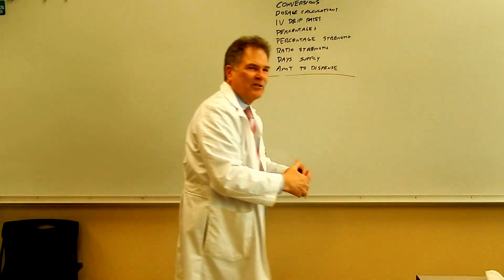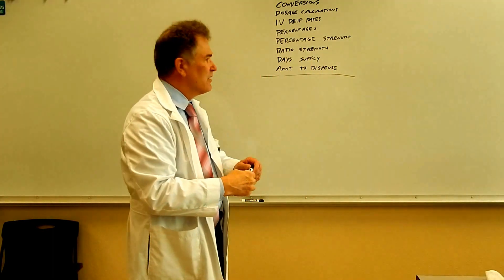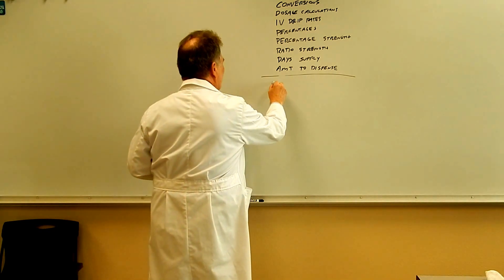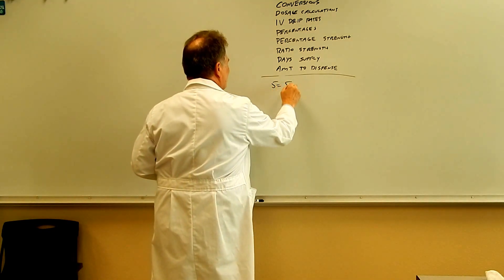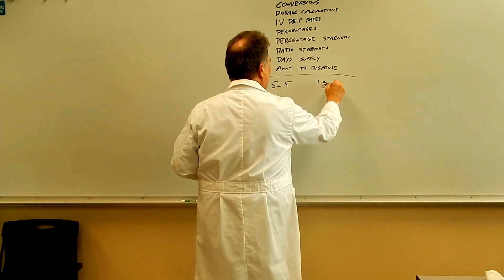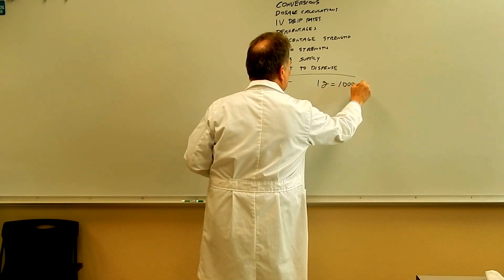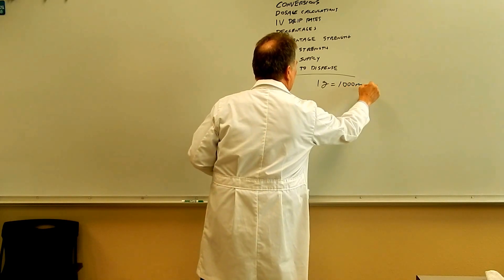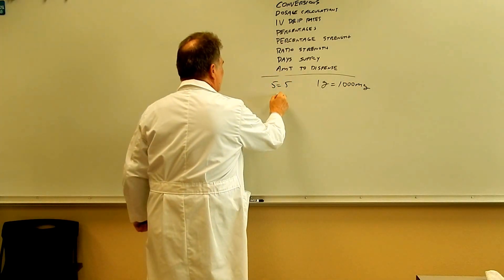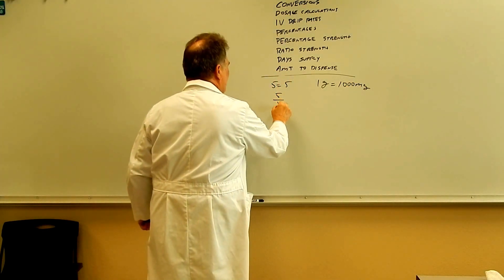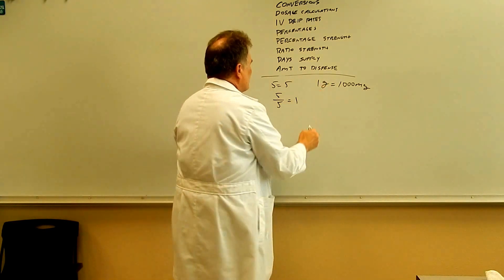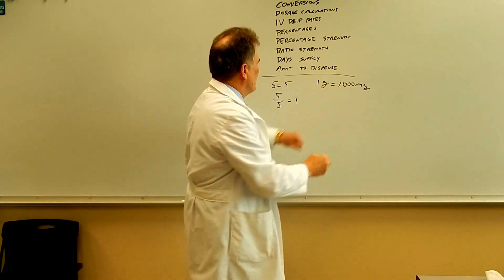Let's just talk about these ratios quickly. We know that five equals five, and we know that one gram equals a thousand milligrams. So five divided by five equals one. We do the same thing here — one gram over a thousand milligrams also equals one.